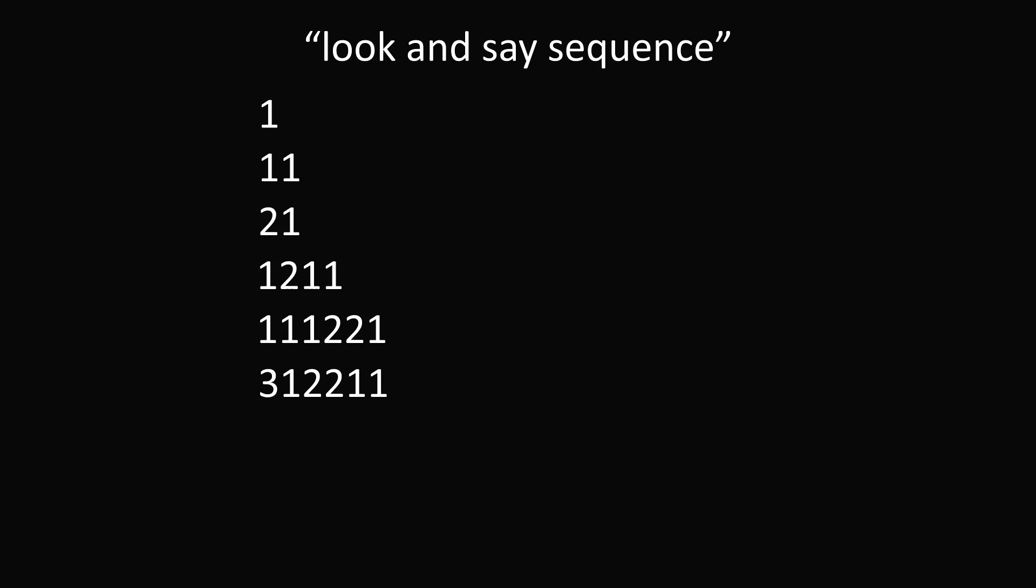So, let's start out with the first number. If we look at this number, we would say it out loud as 1-1. So, this will be the two numbers 1 and 1, and that's the next number in the sequence. Now, we have 1-1. So, how would we say that out loud? This would be said out loud as two 1s. So, we have the number 2 and 1, and this is precisely the next number in the sequence.